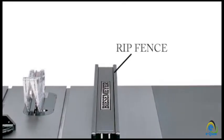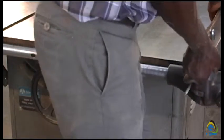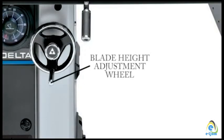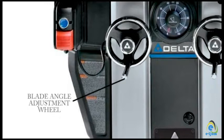Rip fence: it is the fence attached to the table saw. Its position is adjustable, and it can be removed when not required. Blade height adjustment wheel: it is used to raise and lower the saw blade. Blade angle adjustment wheel: it is used to adjust the cutting angle of the saw blade, usually between 45 and 90 degrees.